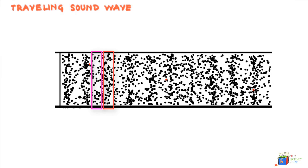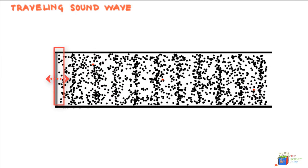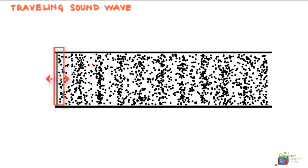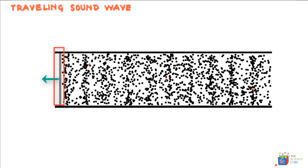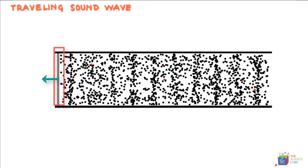Let us not forget that the piston is moving back and forth. And as the piston moves back, it reduces the pressure around the particles in contact with it.